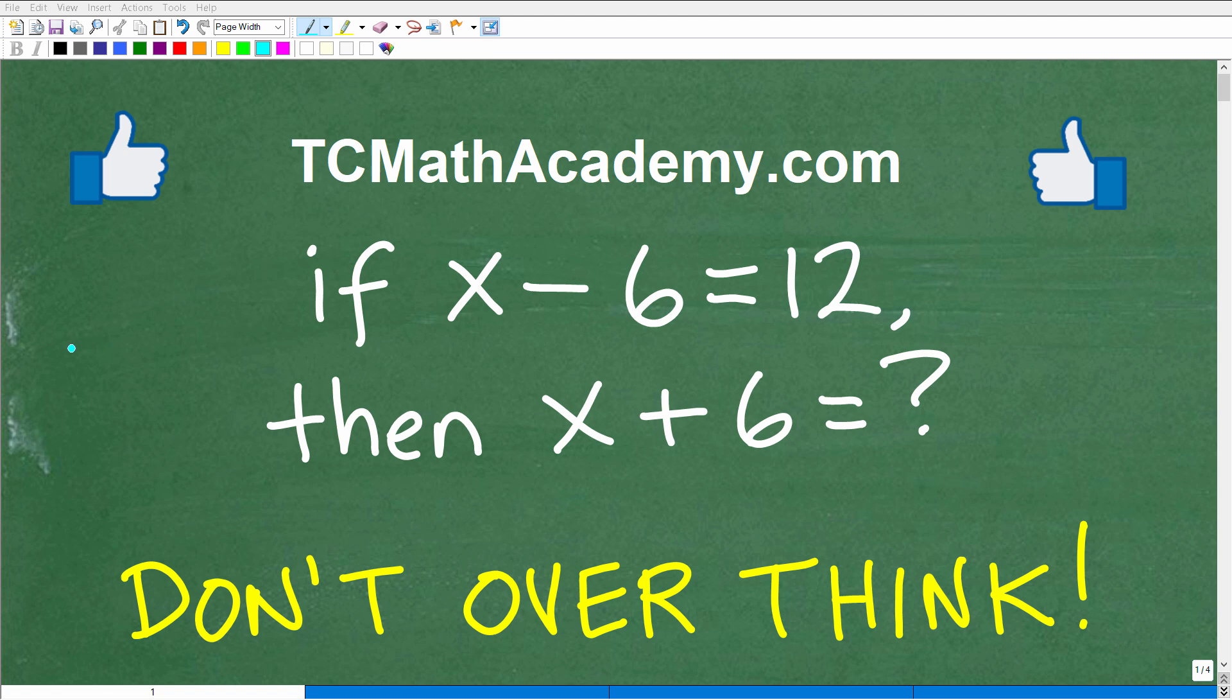Okay, so it's not uncommon for math students to take a pretty simple problem and turn it into something that's more complex than it actually is. This is kind of like overthinking a math problem. And I think this problem here is that type of problem. Let me go ahead and read it to you. It says, if x minus 6 is equal to 12, then x plus 6 is equal to what number?